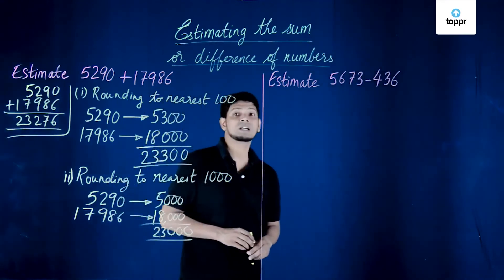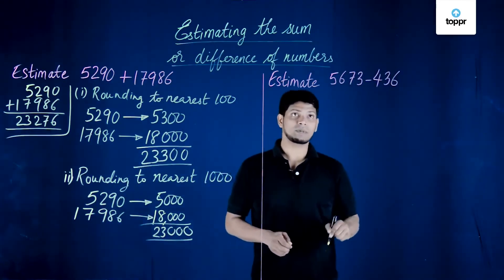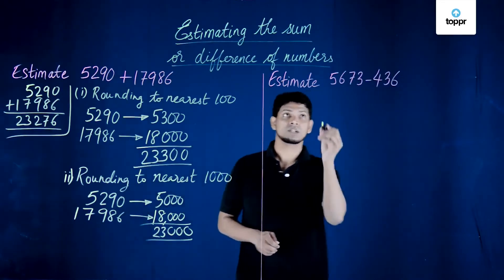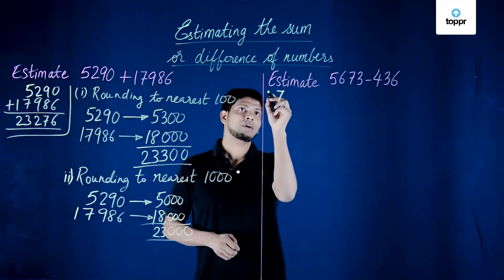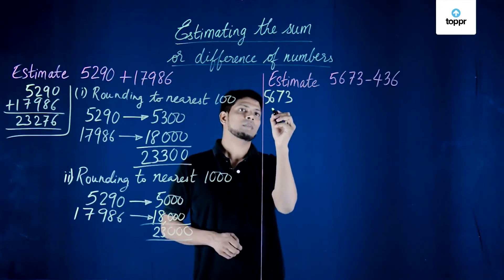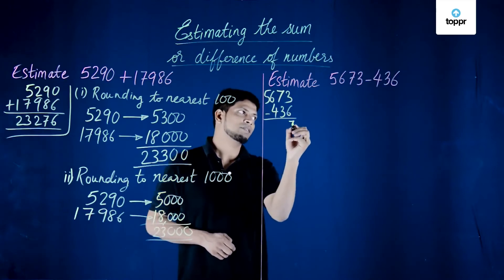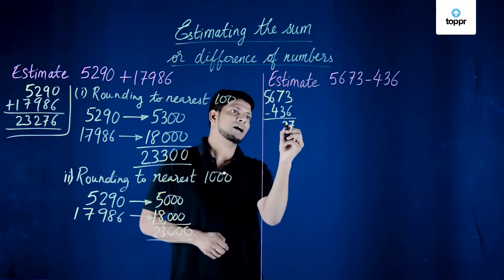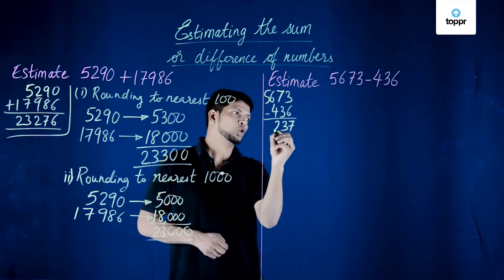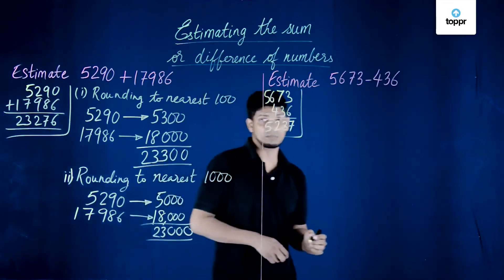Now we will look at the difference. If we actually subtract, we get 5673 minus 436. Working through the subtraction gives us an actual difference of 5237.